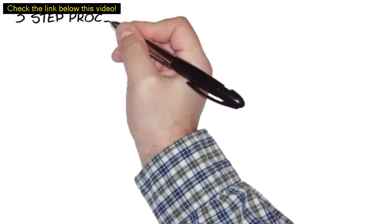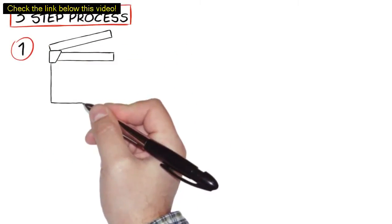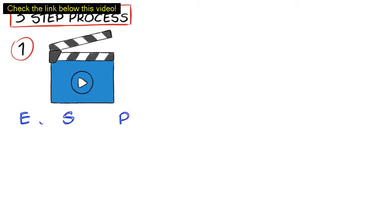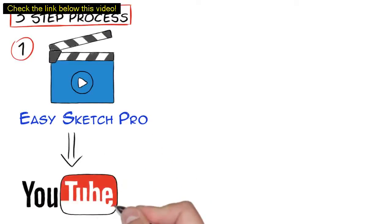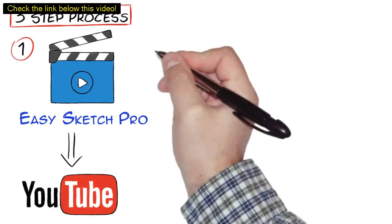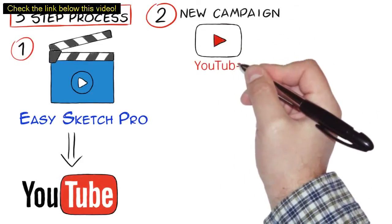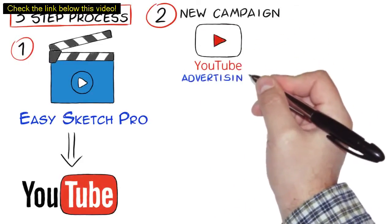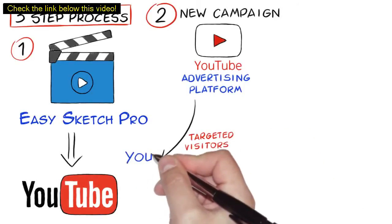It's a simple three-step process. Step 1: Just create an attention-holding video using EasySketch Pro or your favorite video software and upload it to YouTube with the link in the description and caption back to your website or your offer. Step 2: Create a new campaign using YouTube's video advertising platform and then super-drive targeted visitors to your video.